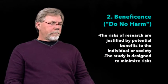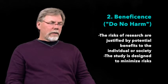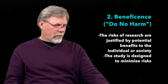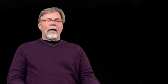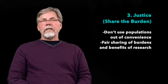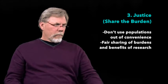A second principle is beneficence or do no harm. And what this really is the risk and benefit. So, do the risks of the research, are they justified by the potential benefits to the individual or to society? And then the third is justice or share the burden. Don't use populations out of convenience, that there's a fair sharing of burdens and benefits of research. So, these are the three principles of the Belmont Report that are followed today in our regulations for the IRB.